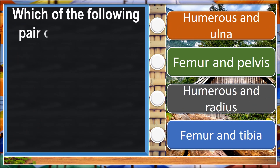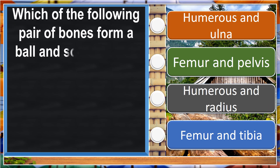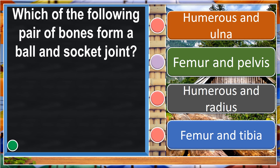Which of the following pair of bones form a ball and socket joint? Femur and pelvis.